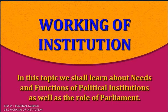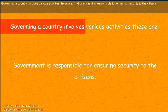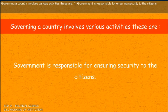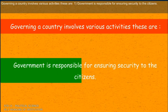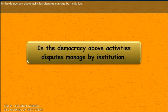In this topic, we shall learn about needs and functions of political institutions as well as the role of parliament. Governing a country involves various activities. The government is responsible for ensuring security to the citizens. In a democracy, the above activities and disputes are managed by institutions.